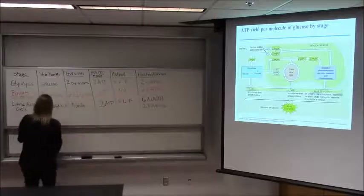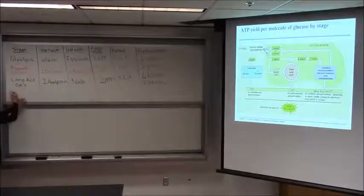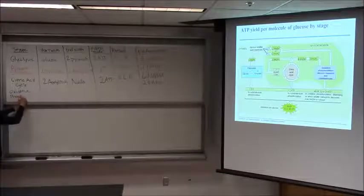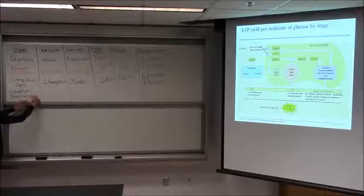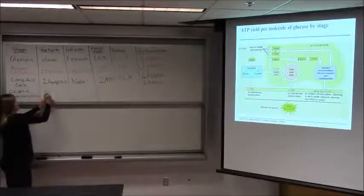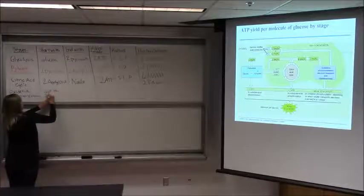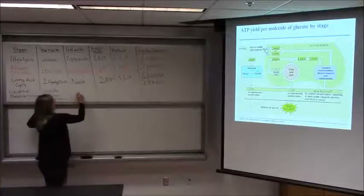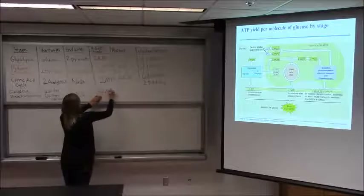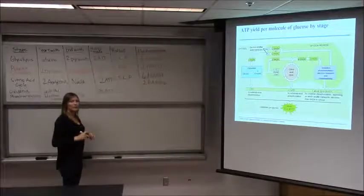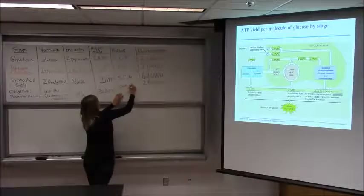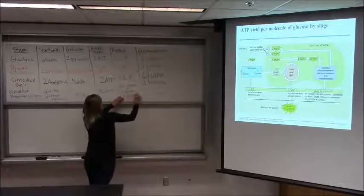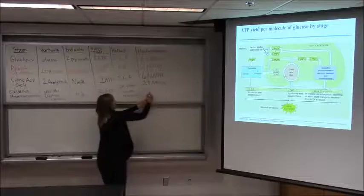Finally, the last stage: oxidative phosphorylation. What do we start with? Just the electron carriers. We make 32 ATP — really made by oxidative phosphorylation, specifically through chemiosmosis. Electron carriers are not applicable here since they are the inputs that drive this stage.